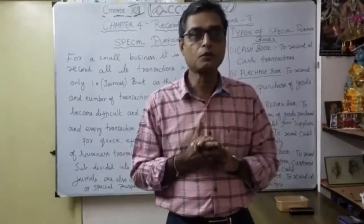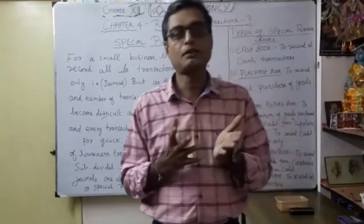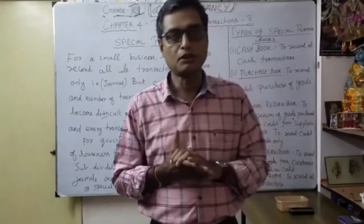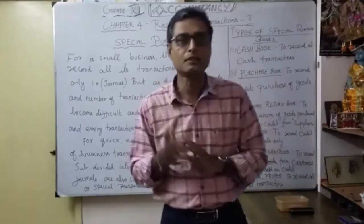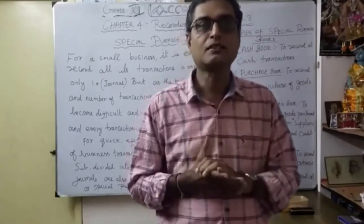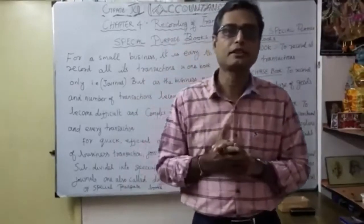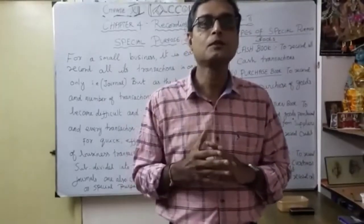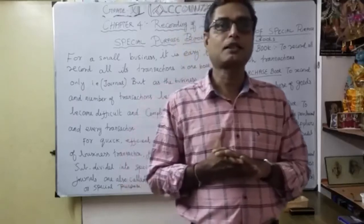Now today I am going to move on to Chapter Number Four: Recording of Transaction, Part Two. What is Part One? In Part One we learned many things — the accounting equation, the traditional approach, the modern approach, the rules about the traditional approach, the five elements of the modern approach, what is journalizing, how to prepare journal entries with the help of the golden rules, and thereafter ledger posting and balancing.